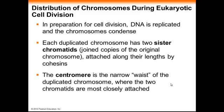The distribution of chromosomes during cell division is a very important aspect of how cell division works. In preparation for cell division, the DNA is replicated and the chromosomes condense. Each duplicated chromosome consists of two sister chromatids, which are copies of the original chromosome attached together by a structure called the centromere.